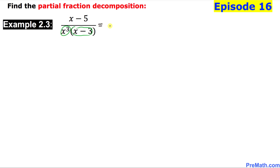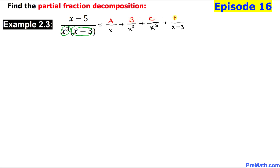x to the power 3 means we are going to have 3 fractions. For x power 3, we start with x power 1, then x power 2, all the way to x power 3. And then for x minus 3, we are going to have one more fraction. On the numerator, for the first fraction we have constant A, then constant B, then C, and finally constant D. Our task is to find the values of A, B, C, and D.